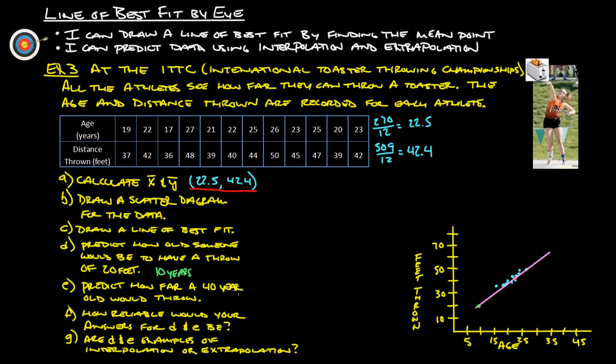Predict how far a 40-year-old would throw. So now we'd go over here to age 40. We'd go straight up to where that line would be. You have to extrapolate that line out - looks like it'd be roughly right there. We'd go over and say that'd probably be about a little above 70. So let's say 72 feet, roughly.